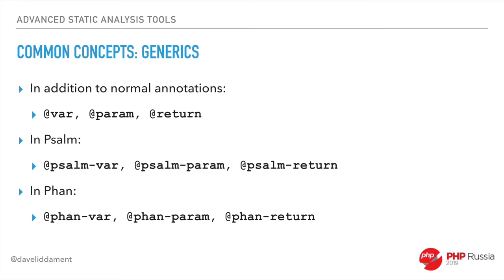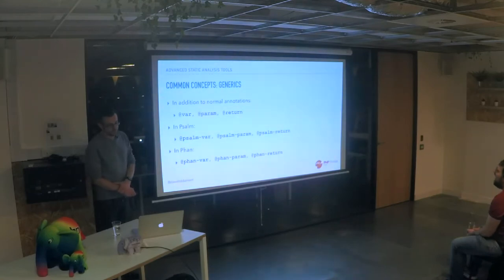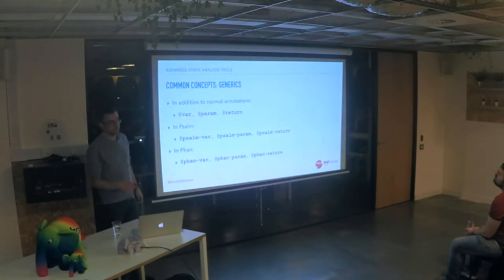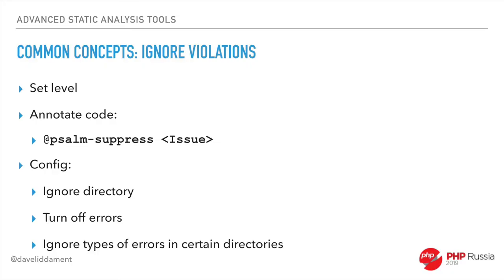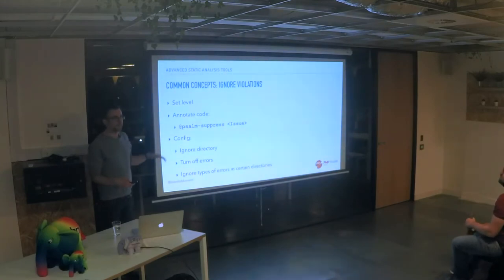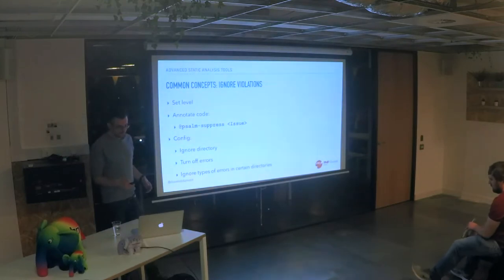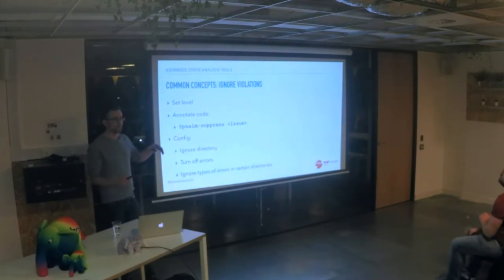Common concepts between these tools: you can annotate things with @var, @param, and @return. In Psalm you have @psalm-var, @psalm-param, and @psalm-return. Phan has these too, and as of a couple of months ago so does PHPStan. You can annotate code to suppress issues of a certain type, and the config files allow you to be very specific about ignoring certain rule types or directories. There's a lot of configuration available if you need it.